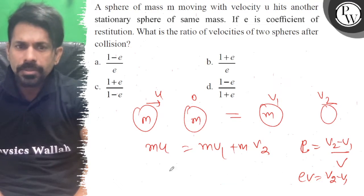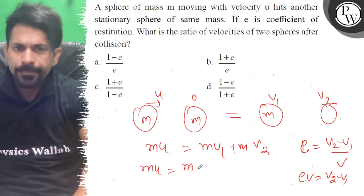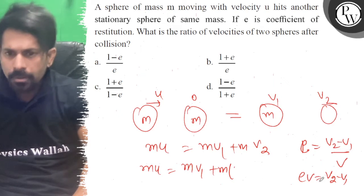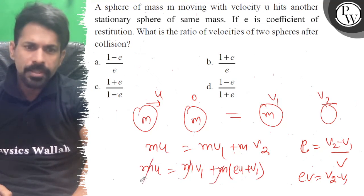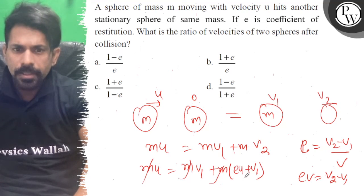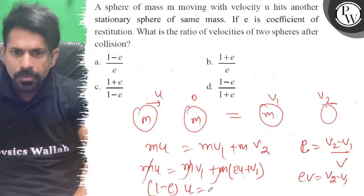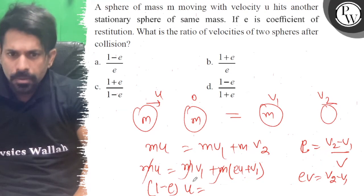From momentum conservation, u equals v1 plus v2. From coefficient of restitution, e u equals v2 minus v1. Adding these equations gives u plus e u equals 2 v2, and subtracting gives u minus e u equals 2 v1.